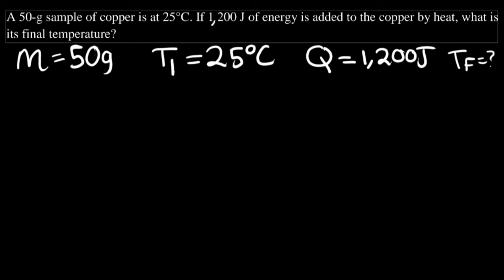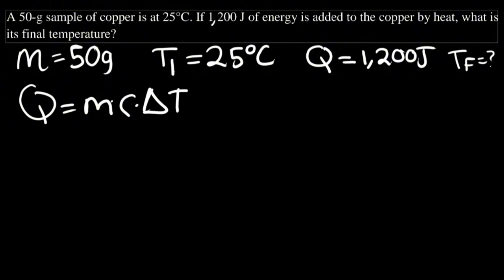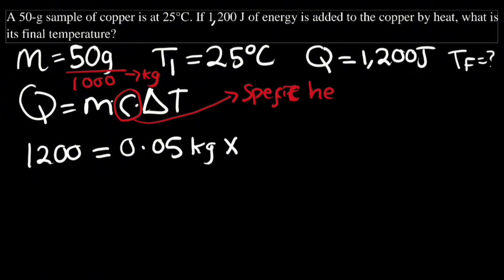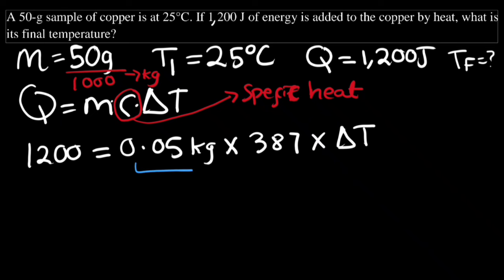We know that the formula for energy is Q = mcΔT. So 1200 joules equals the mass — which must be in kilograms, so we divide 50 grams by 1000 to get 0.05 kilograms — multiplied by the specific heat of copper. We use the specific heat of copper because the question specifies copper, which is 387 J/(kg·°C), multiplied by the difference in temperature.